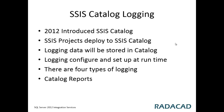The SSIS catalog is a kind of repository for storing SSIS packages and projects in the new deployment model, which is the project deployment model. All projects in a single SSIS project are related to each other and deployed into the SSIS catalog. The SSIS catalog is actually a SQL Server database in which all packages, logging information, operations, and that sort of things are stored.